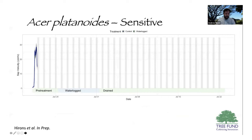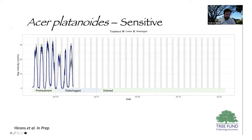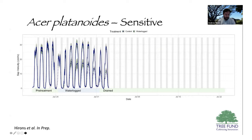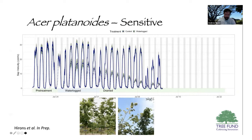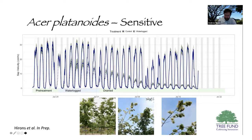For Acer platanoides, the two cohorts of trees were very similar pre-treatment, but very quickly after waterlogging, sap flow in the waterlogged group really plummeted. After draining, there was a continued decline — eventually resulting in total defoliation, with only samaras remaining on the stem ends. That was a really profound response to waterlogging in Norway maple.